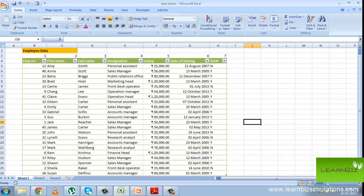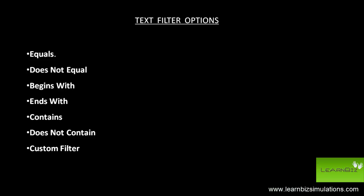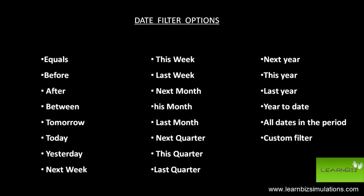Now let us look at filtering. The procedure for specifying the data that you want displayed in an Excel data list is called filtering. The procedure for extracting only the data that you want from a database or a data list is called querying the database. You can click on the auto filter button on the column on which you want to filter the data and then click the appropriate filtering criteria on that column's drop-down menu. It has many text filter options like equals, does not equal, date filter options, as well as number filter options.